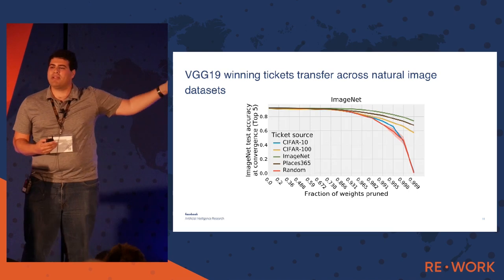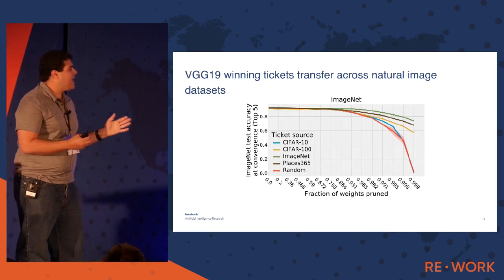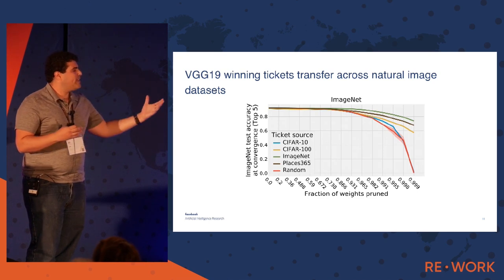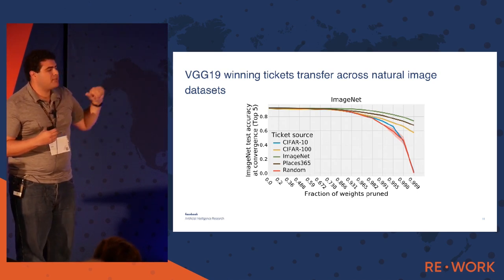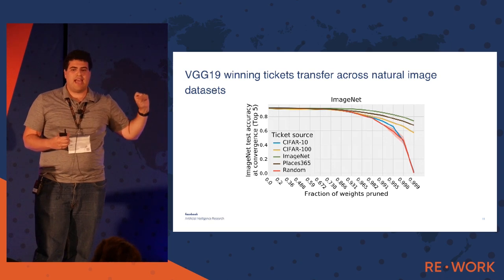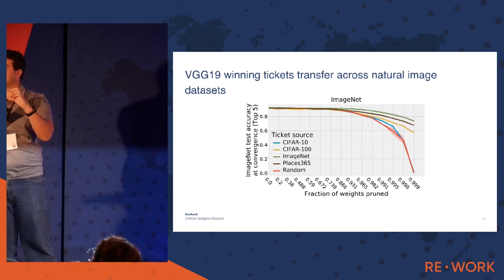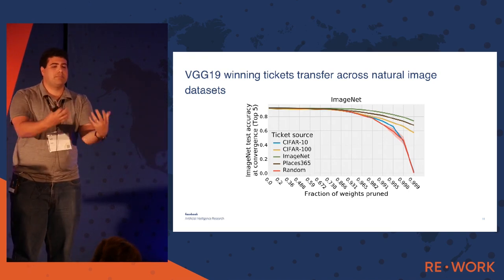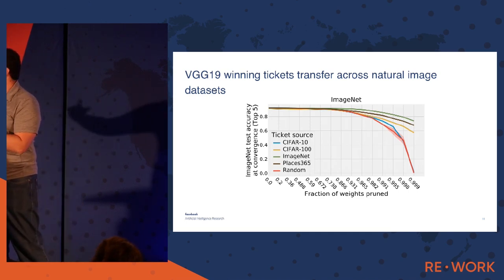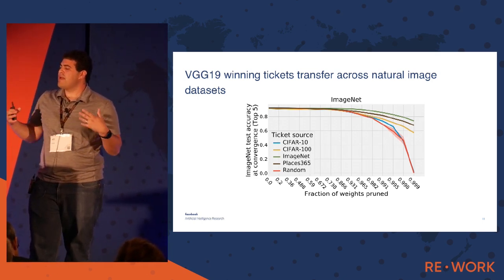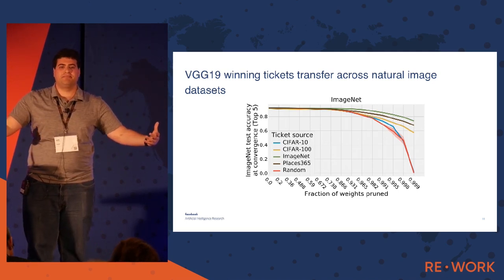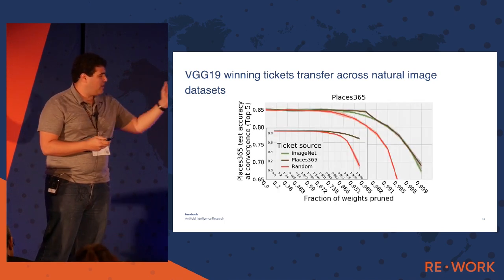Going all the way up to ImageNet, we get a really cool pattern. ImageNet tickets in green do really well. We can take winning tickets from other datasets like Places365, another large dataset, and that works pretty well — but not quite as well as ImageNet tickets, suggesting some aspect is slightly overfit. However, if we take a ticket from a really small dataset like CIFAR-10 and move it to a large dataset like ImageNet, it doesn't work well. The key takeaway: the bigger the dataset, the more general the winning ticket you find.